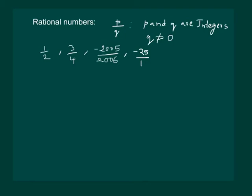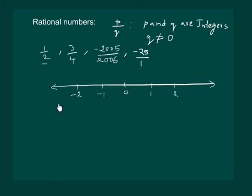Let us try to represent half on the number line. Consider a number line representing integers — we have 0, 1, 2 and so on, and similarly minus 1, minus 2 and so on. To represent half, we will divide the first unit, that is from 0 to 1, into 2 parts, and the point on the number line will represent half. Dividing the second unit into two equal parts, the third point will represent 3 by 2, the next 4 by 2, and so on.